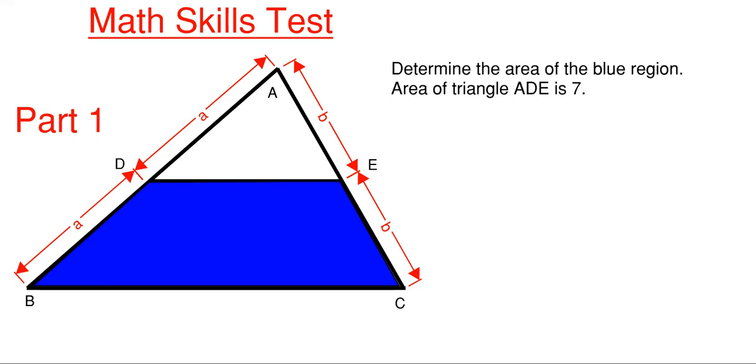What we have on the screen here is this big triangle ABC, and we need to determine the area of the blue region. We're given that the smaller triangle at the top, triangle ADE, has an area of 7.